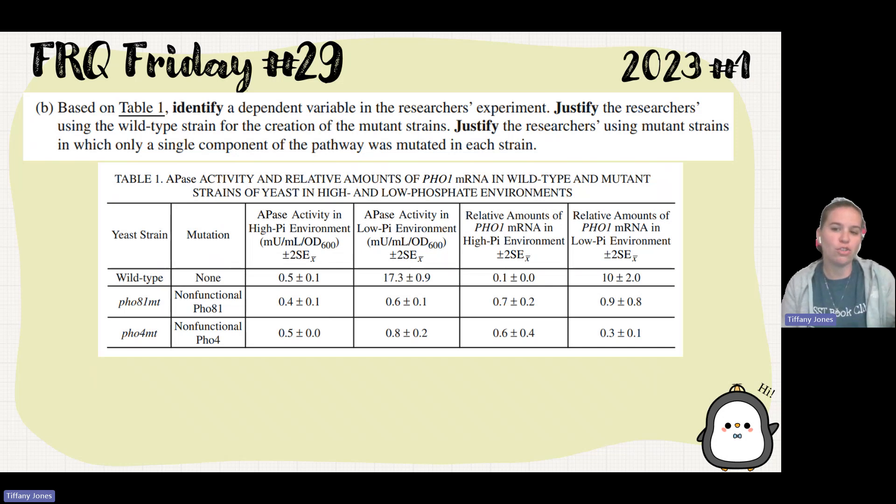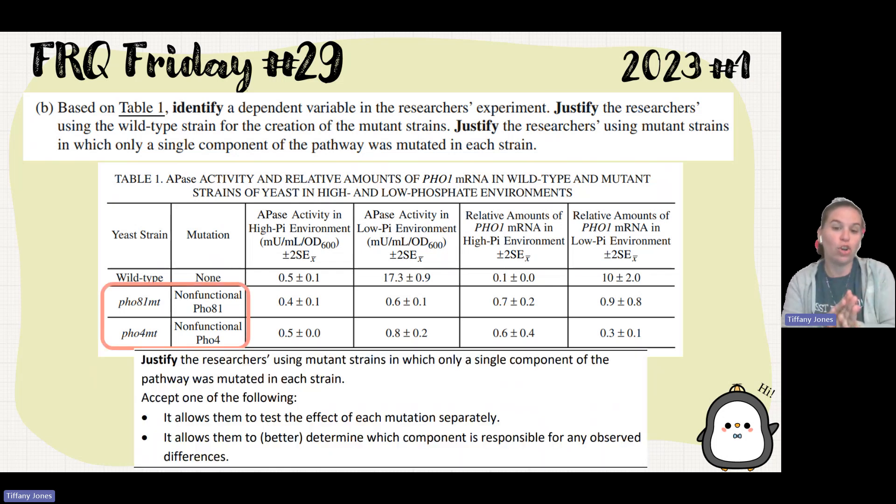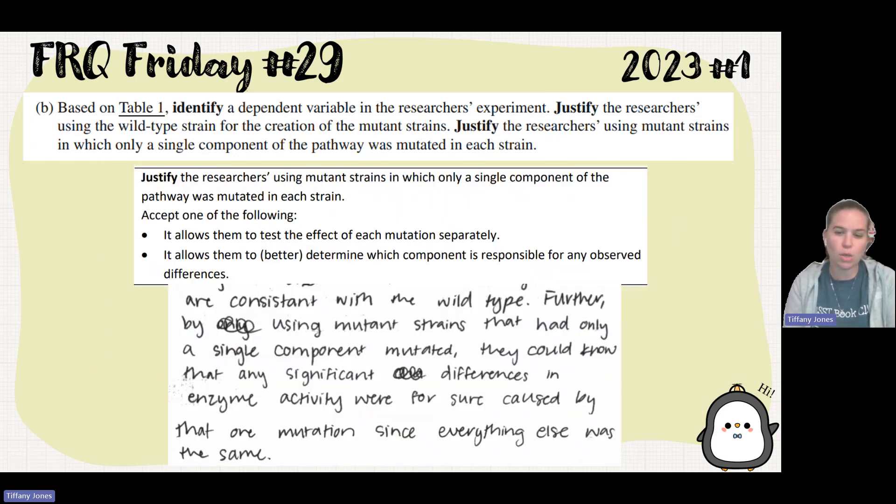Justify the researcher using the mutant strain in which only a single component of the pathway was mutated. By us only mutating that one thing, we're going to be able to determine the effects of each of those mutations separately. I can see exactly what a mutation in PHO81 does. I can see exactly what a mutation in PHO4 does. So it allows them to better determine which component is actually responsible for the results that we see. Student said, furthermore, by using the mutant strains where they had only a single component mutated, they could then know any significant differences in enzyme activity were for sure caused by that one mutation, since everything else was the same.